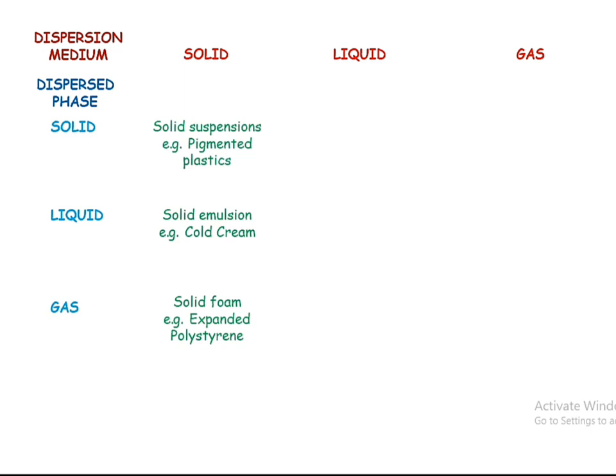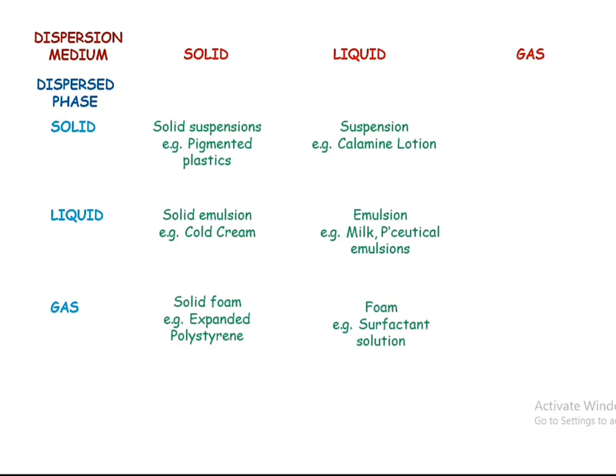When the dispersion medium is liquid and the dispersed phase is solid, suspensions are formed — for example, calamine lotion. If both the dispersed phase and dispersion medium are liquid, emulsions are formed — for example, milk and pharmaceutical emulsions. When the dispersed phase is gas dispersed in a liquid, the formulation is a foam — for example, surfactant solutions, which form a high amount of foam.